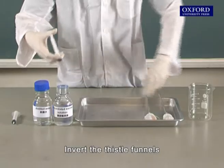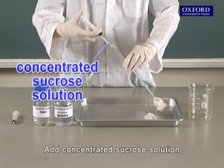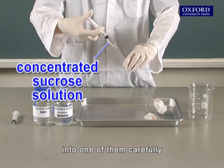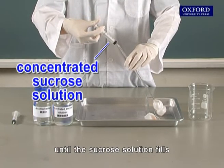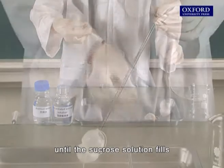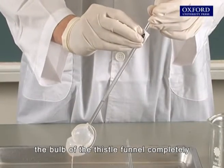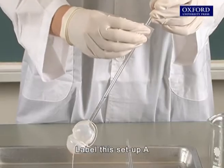Invert the thistle funnels. Add concentrated sucrose solution into one of them carefully until the sucrose solution fills the bulb of the thistle funnel completely. Label this setup A.